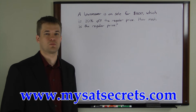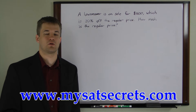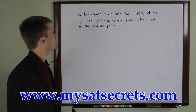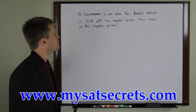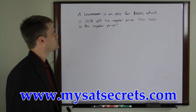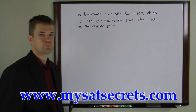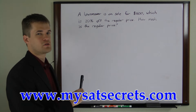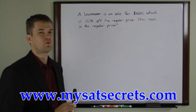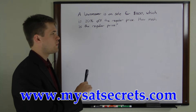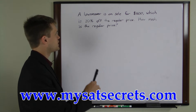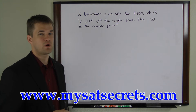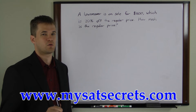Here's an example of the type of problem you may encounter on your exam. A lawn mower is on sale for $1600, which is 20% off the regular price. How much is the regular price? The first thing you want to do is convert the words to an equation. Be very careful, because if you translate the word problem incorrectly, it doesn't matter how good you are at solving — you'll get the wrong answer.